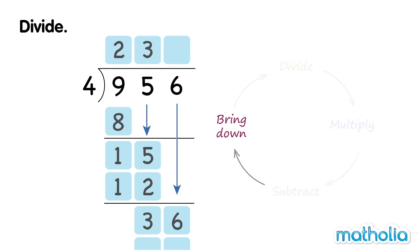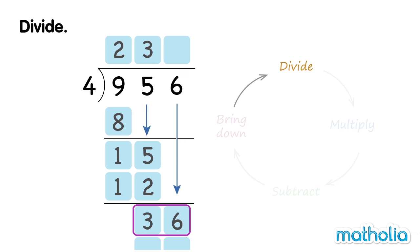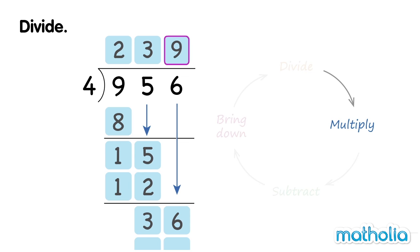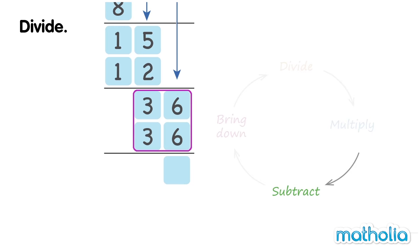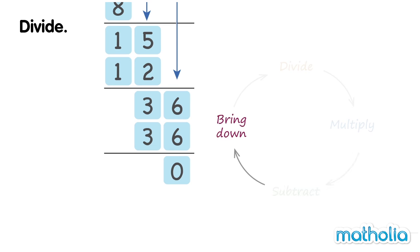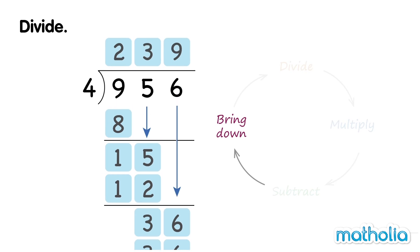Bring down the ones. We now have 36 ones. Divide. 36 ones divide 4 equals 9 ones. Write the 9 in the ones column at the top. Multiply. 9 ones times 4 equals 36 ones. Subtract. 36 minus 36 equals 0. There are no more numbers to bring down. We have finished dividing. 956 divide 4 equals 239.